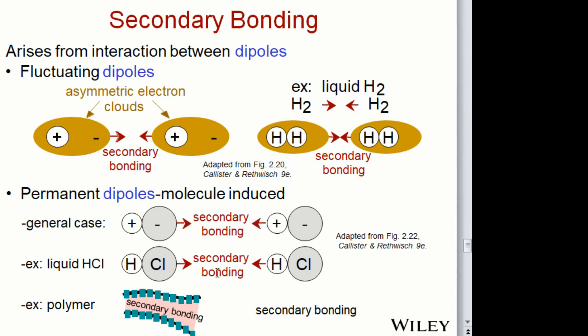Hydrogen chloride is more likely to exhibit secondary bonding because it's in a liquid state. Also, you have secondary bonding in polymers. Polymers are long chains of hydrogen-carbon bonds; along the chains the bonds are very strong because that's covalent, but between the chains you might have weaker secondary bonding occurring there.